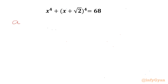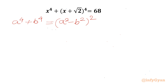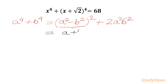Let me write the formula for a⁴ + b⁴. Can we write this equal to (a² - b²)²? Expanding, this gives a⁴ + b⁴ - 2a²b². So we have to compensate that minus by adding 2a²b². Now using the difference of two squares formula, we can write it as (a+b)²(a-b)² + 2a²b².